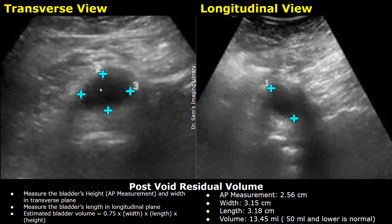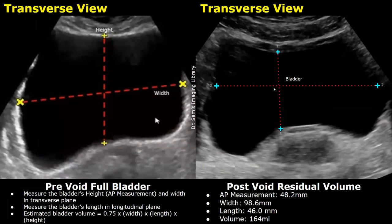After urinating, the bladder appears very small in these images. In this example, the AP measurement was 2.56 centimeters, the width was 3.15 centimeters, and the length was 3.18 centimeters. This gave a volume of 30.45 milliliters, which is normal. So this bladder has a normal post-void residual volume.